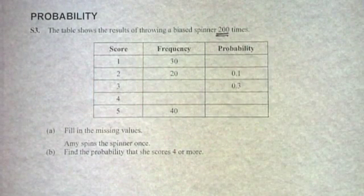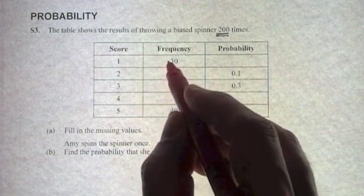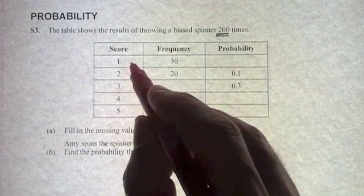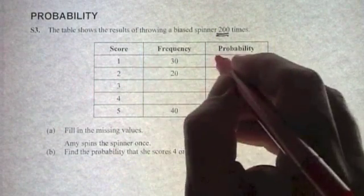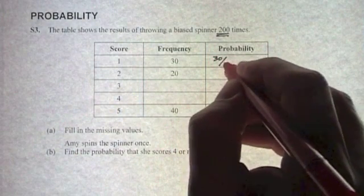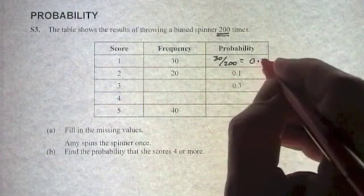I'm going to first of all work out the missing probabilities. If the frequency of spinning 1 was 30, then the probability of 1 must be 30 divided by 200, and that comes to 0.15.